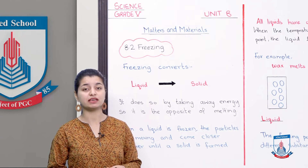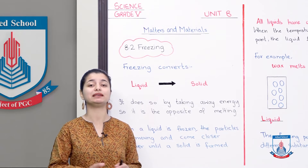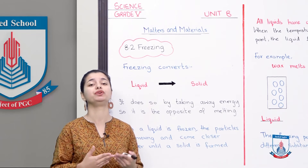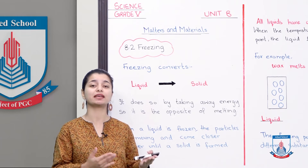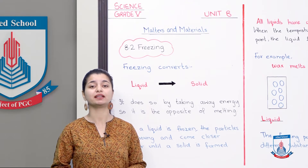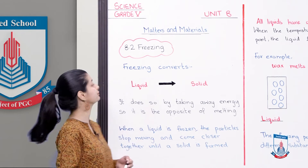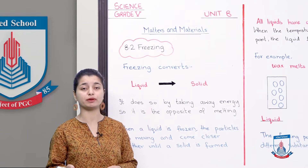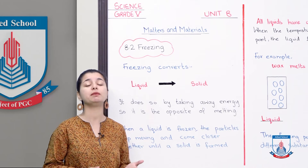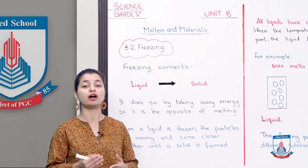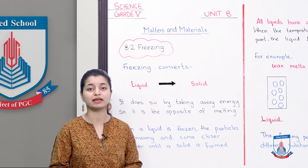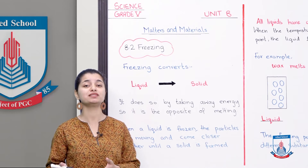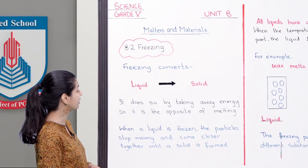After studying melting, today we are talking about freezing. Freezing is completely the reverse of melting, so if you understood melting well, you will be able to understand how the steps of freezing occur. Freezing converts liquid into solid — when matter in liquid form is cooled down, it is converted into solid. This process is known as freezing. It does so by taking away energy, so it is the opposite of melting.